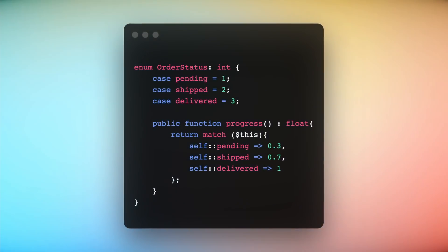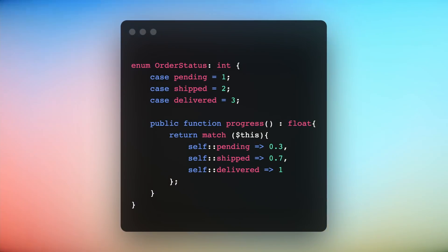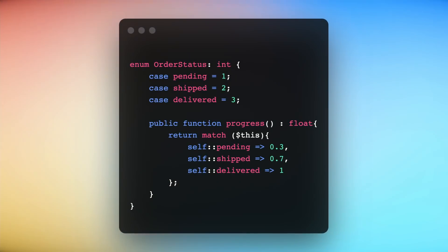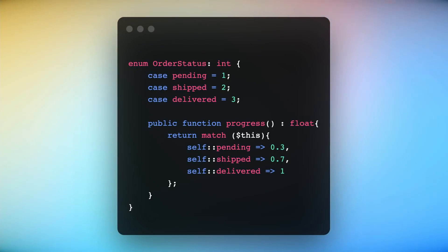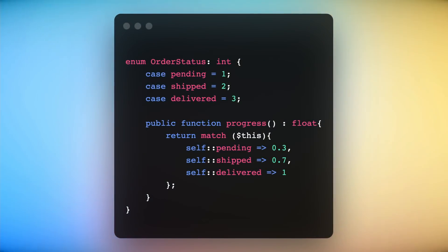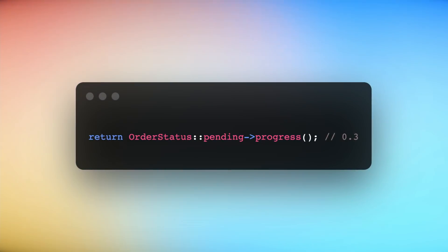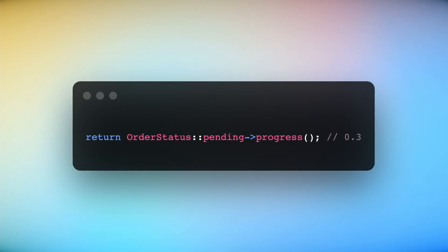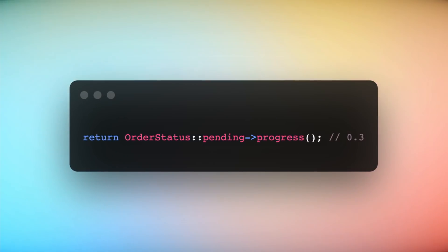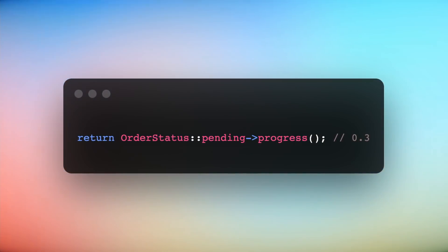Here we added a progress method that returns the order progress depending on its status. The progress will be 30 percent if the order is pending, 70 when shipped, and 100 when delivered. We can call the progress method on an enum to get the current order progress. This is very useful when you want to associate a specific state with each value of your enum.